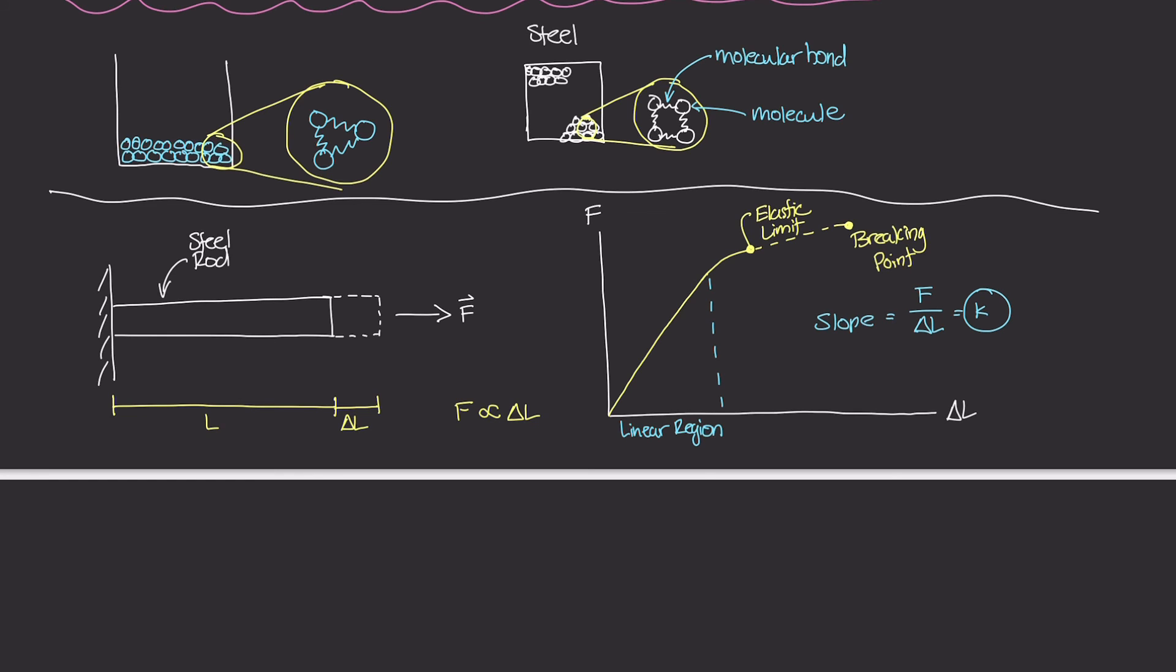Now, when we refer to the spring constant, what we're really talking about is the constant that applies to these molecular bonds, the spring-like molecular bonds. Now, you might also know this relationship of the slope of this linear region to be F is equal to K times delta L. You might also know that as F equals KX, where X is the displacement. And this right here is none other than Hooke's Law. And all it states is that within the linear region, F is directly proportional to the amount that that rod stretches by a proportionality constant, K.